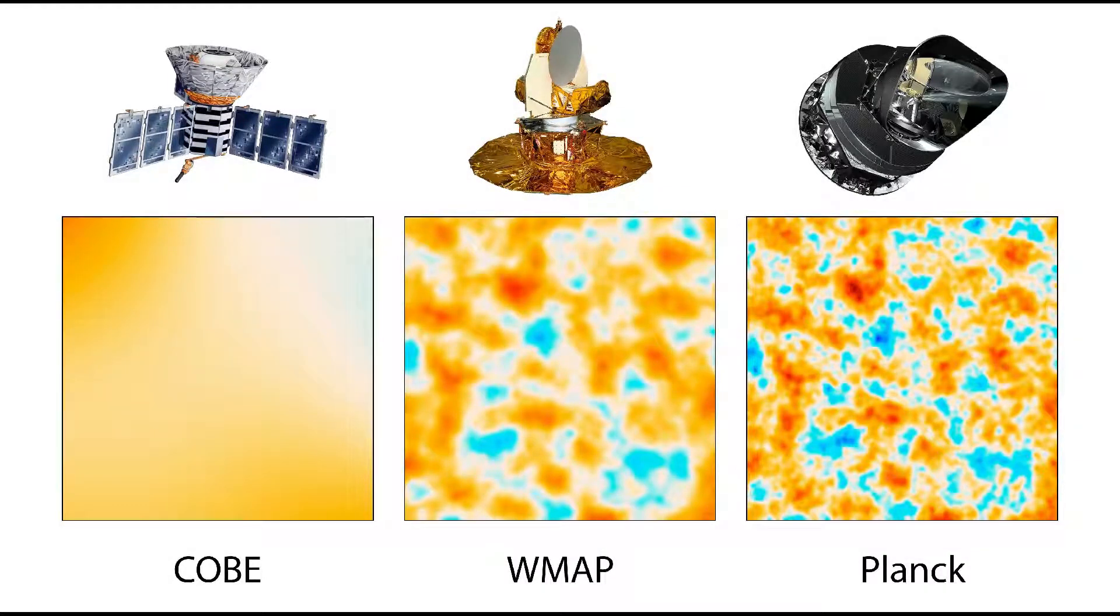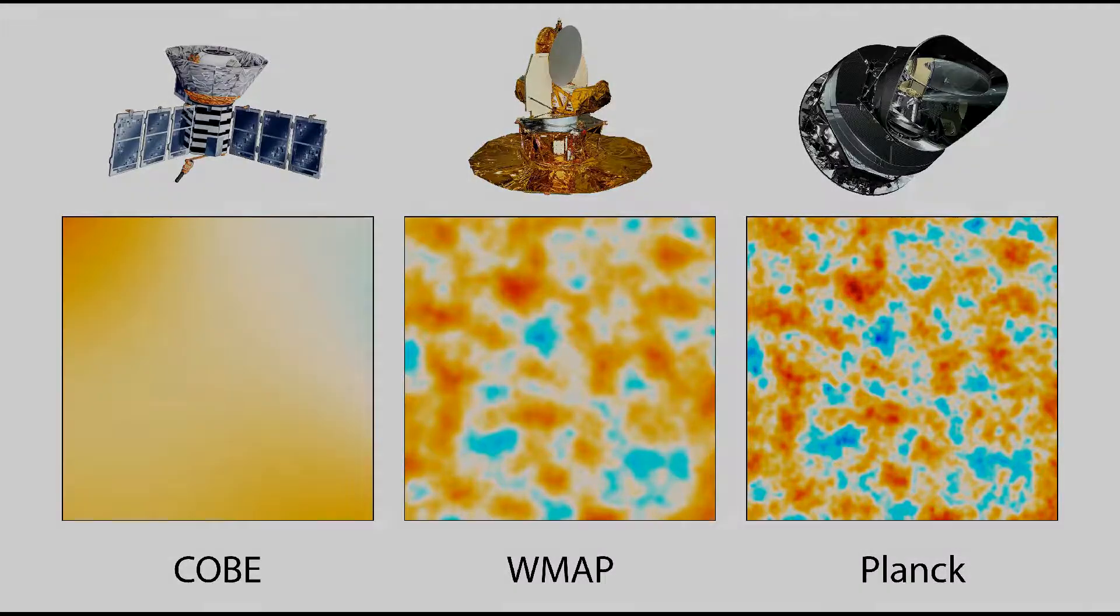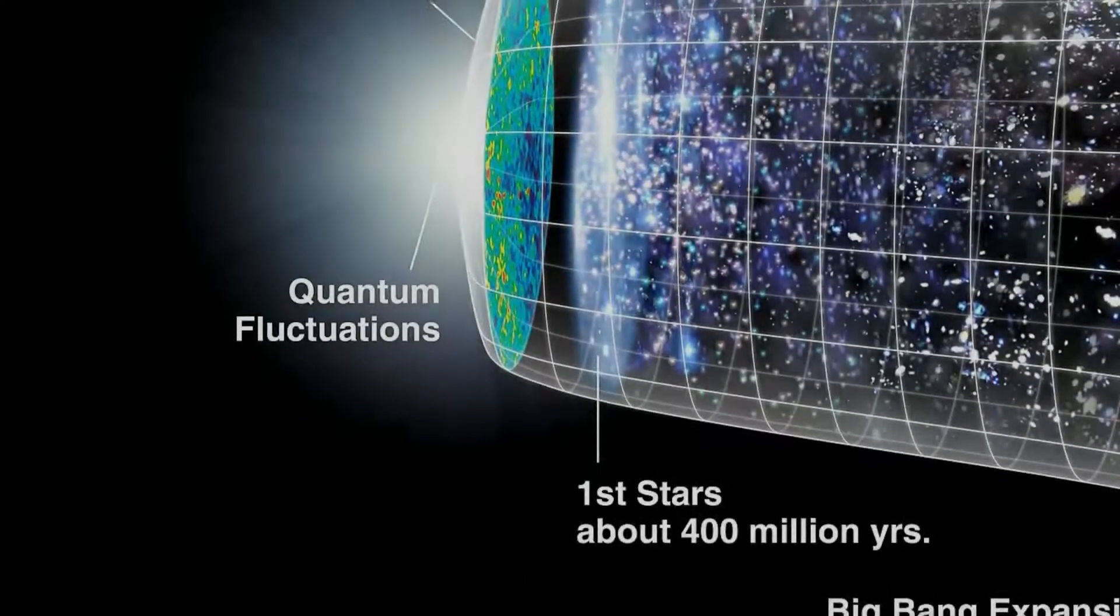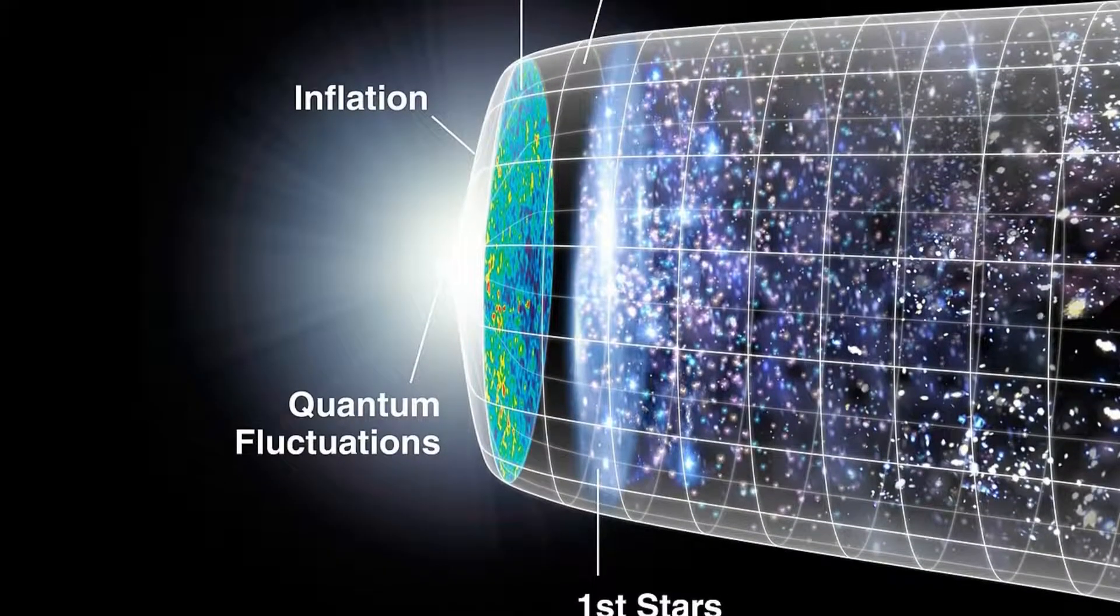Inflation leads to a reality 10 to the power of 78 times bigger than previously assumed, and more likely than not, implies an infinite space populated by infinite Big Bangs. If life is possible, inflation ensures it will recur an infinite number of times in an infinite number of places.